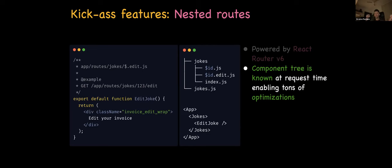The component tree is known at request time. Based on the URL, powered by React Router, Remix knows all the components it will have to render. What's really powerful is that it's able to load the required data for those components — the dynamic data — in parallel, fill the components with that data, and return one full response.